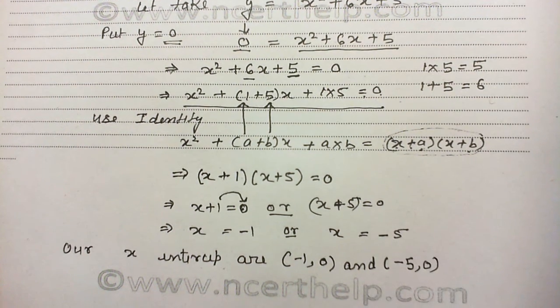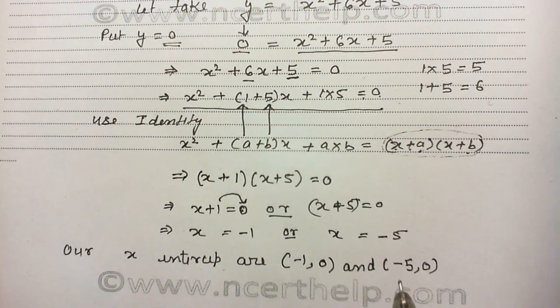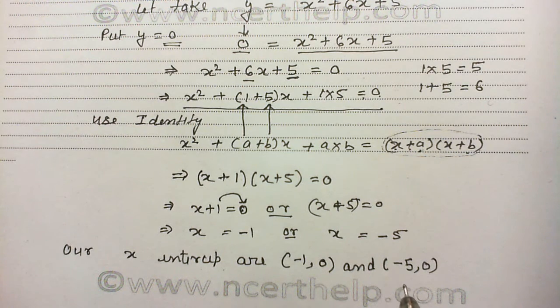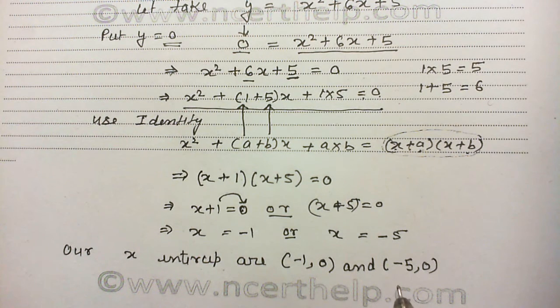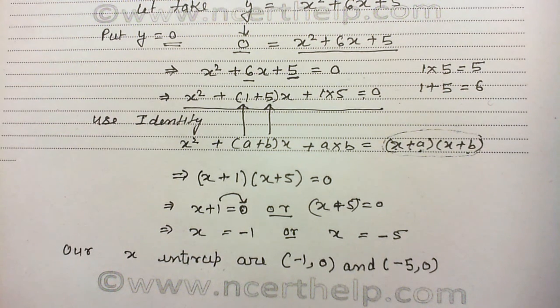There are two intercepts: minus 1 comma 0 and minus 5 comma 0. If you learned this question properly with the help of this video, please subscribe our channel and don't forget to like our video. Thank you for watching this video. Take care. Bye.